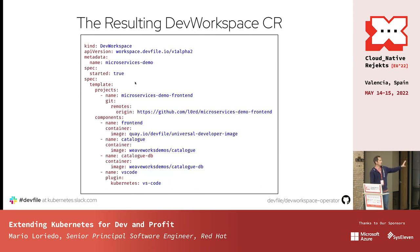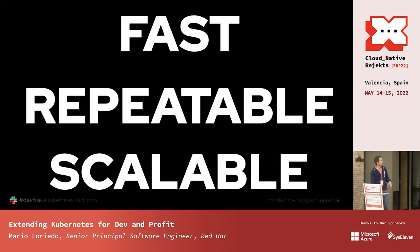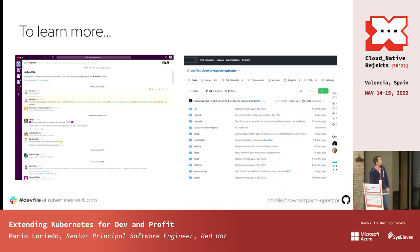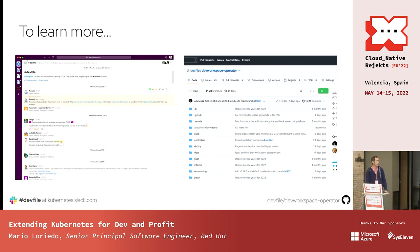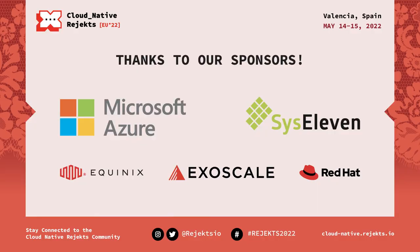That's it for the demo. This is the resulting custom resource — the DevWorkspace. We've also added a few ConfigMaps and Secrets for configuration specific to my environment that I don't want to version with the rest. We've seen that it's fast, it's repeatable, and it's scalable. To learn more, we're on the devfile channel on Kubernetes Slack, or you can find us on GitHub under the devfile organization — the repository for the DevWorkspace operator source code.